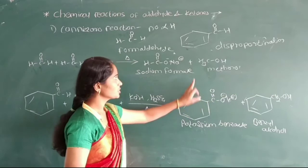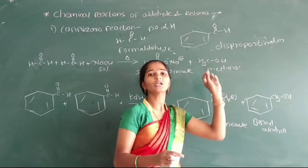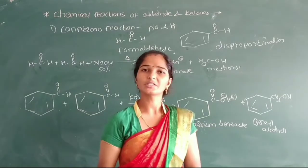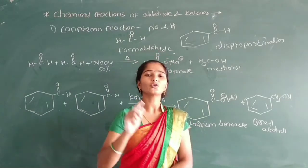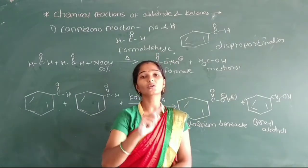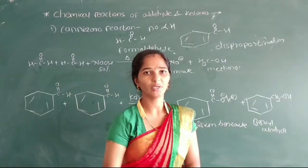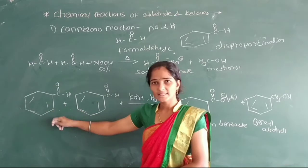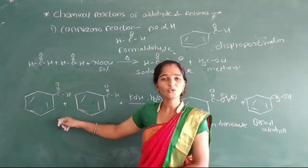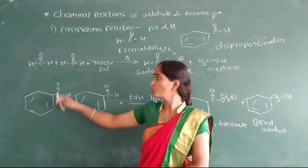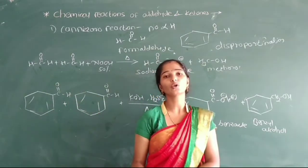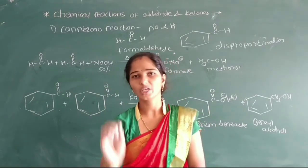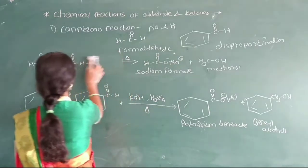This reaction is called a disproportionation reaction. Similarly, there is also a cross Cannizzaro reaction. This cross Cannizzaro reaction means formaldehyde reacts with benzaldehyde. We are using two different aldehydes with no alpha hydrogen atom to form two products. It is called cross Cannizzaro reaction.